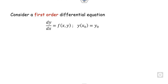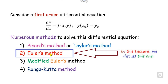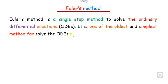We will firstly look at the brief theory about Euler's method so that you may understand how this method will help you to solve the differential equation. If you consider any first order differential equation like dy/dx = f(x, y), provided an initial condition, then there are numerous methods available to solve this differential equation: Picard's method, Euler, Modified Euler, Runge-Kutta, and so on. In this lecture, we will see how Euler's method will help to solve this problem. Euler's method is the single step method helpful for solving ordinary differential equations. It is one of the oldest and simplest methods to solve this problem.